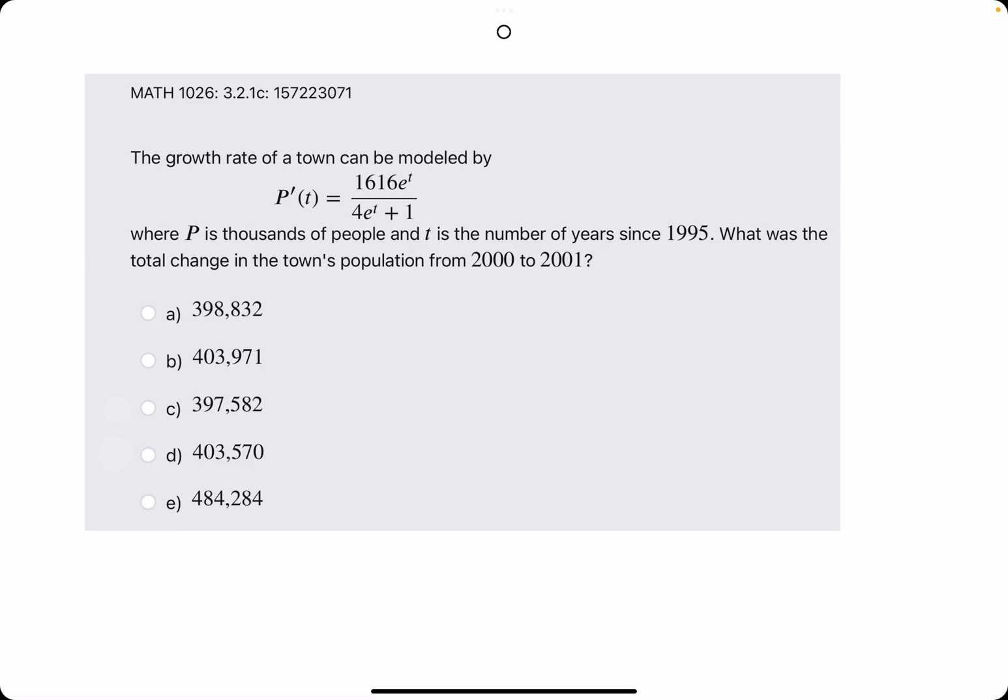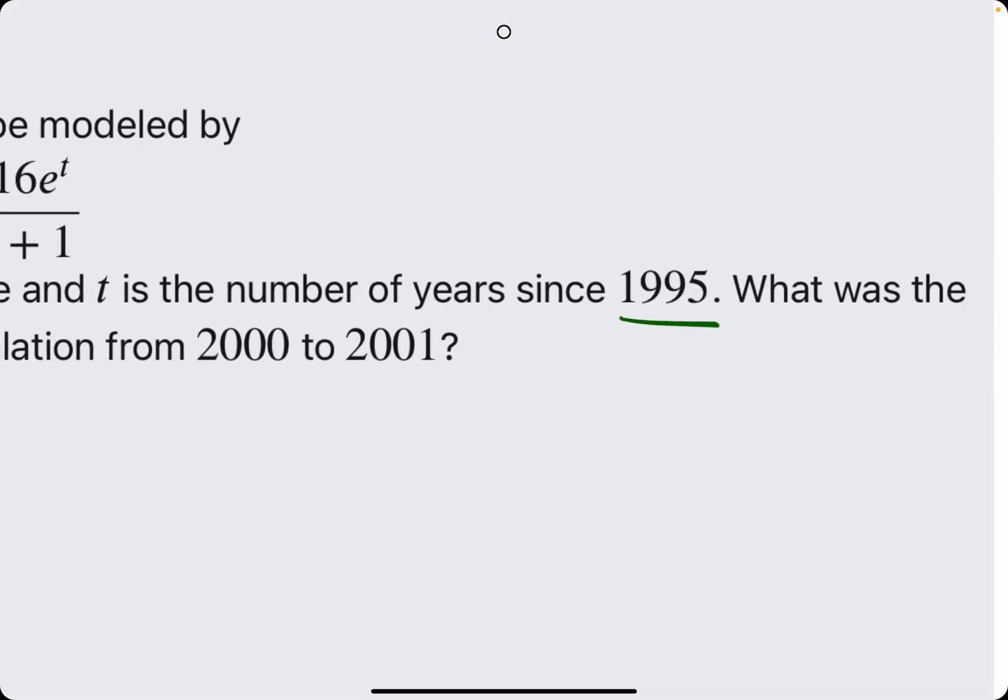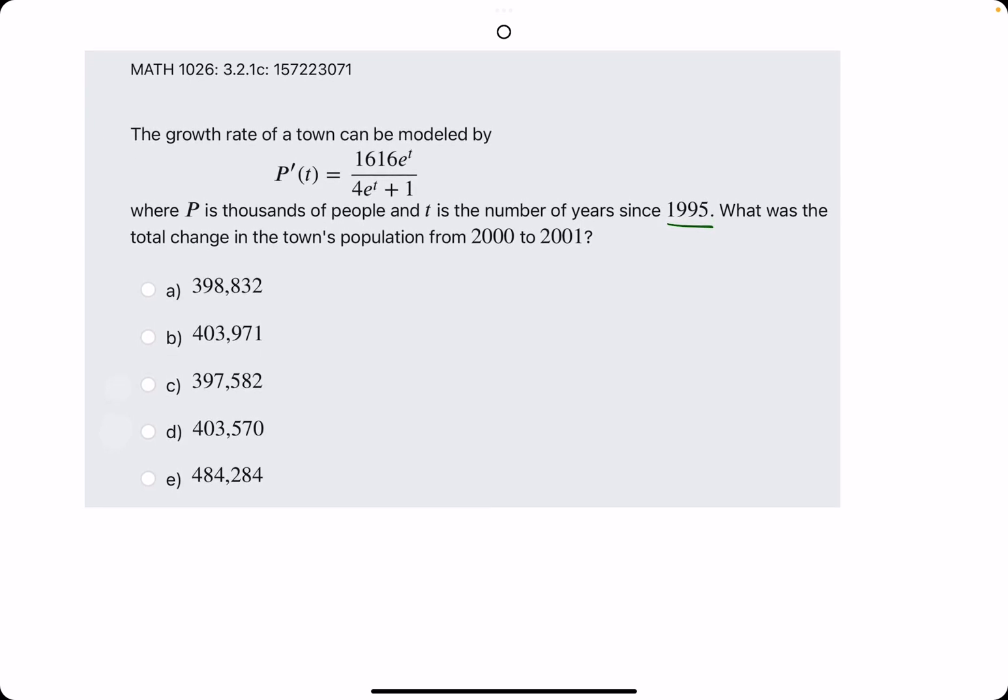Same exact method. Same process. So in this case, T is number of years since 1995. So 2000 is represented by T equals 5, where 2001, I guess, is T equals 6. Integrating from 5 to 6 of 1616E to the T over 4E to the T plus 1 DT.